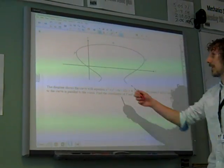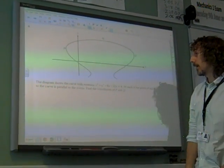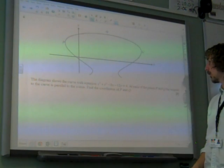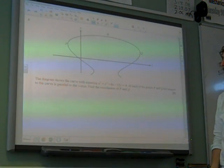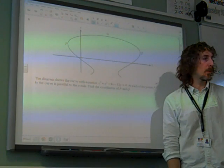Question 6. The diagram shows this lovely curve, like a mushroom or something, with this equation. At each of the points P and Q, the tangent to the curve is parallel to the y-axis. Find the coordinates of P and Q.